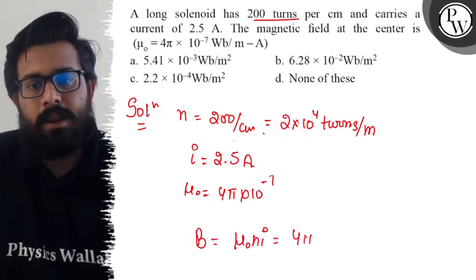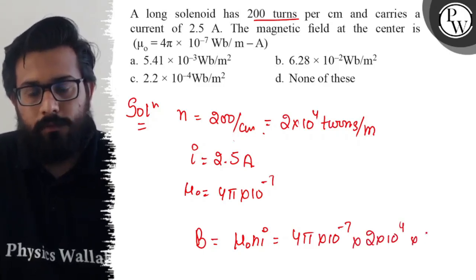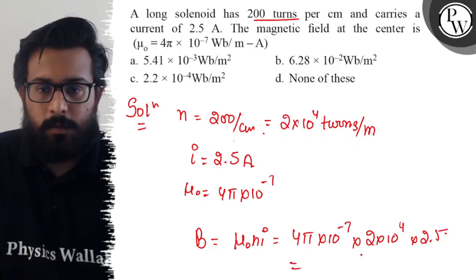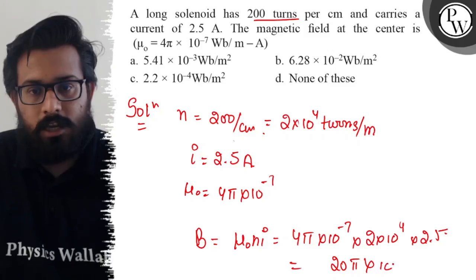Now just put the values: 4π × 10^-7 × 2 × 10^4 × 2.5. So it comes out with 2.5 × 2 is 5 and 5 × 4 is 20. So 20π × 10^-3.